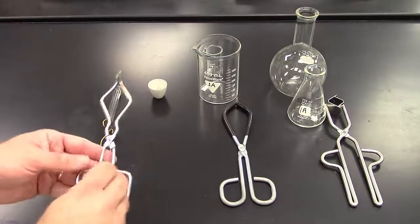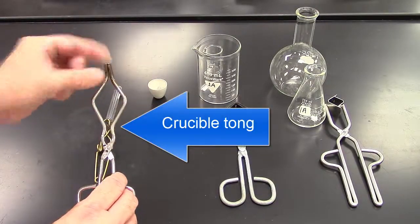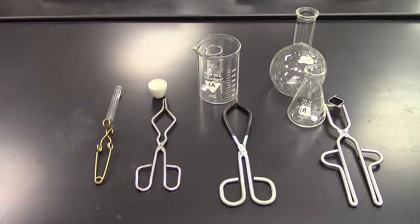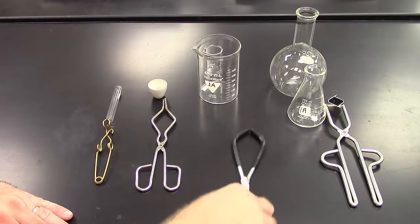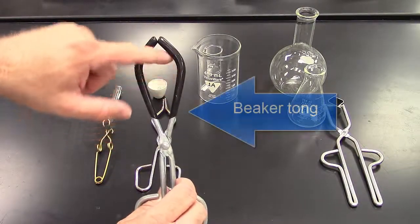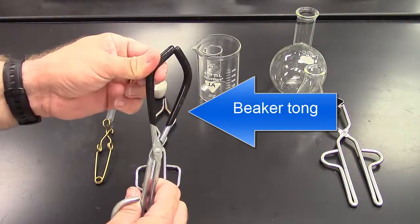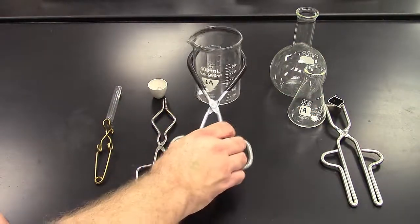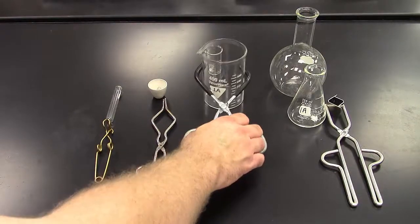So this is a crucible tong, distinguished by the little ends there and the spot in the middle. Now, the other ones that are very common are the beaker tongs. The beaker tongs, notice, that has a wider one and typically will have some rubber grips on it. They are great for holding on to beakers, hence the name beaker tongs.